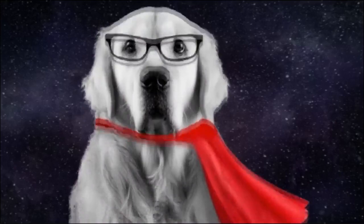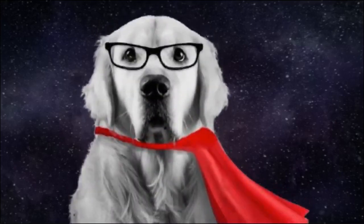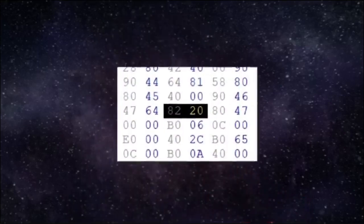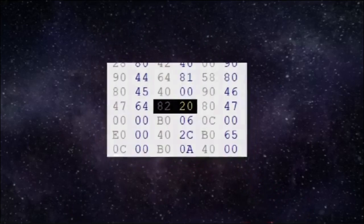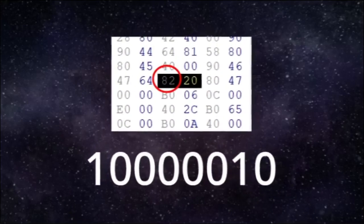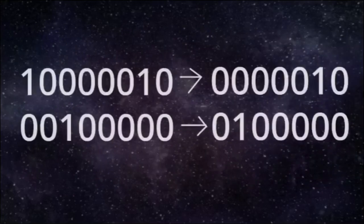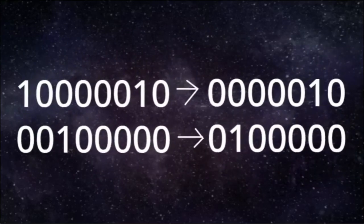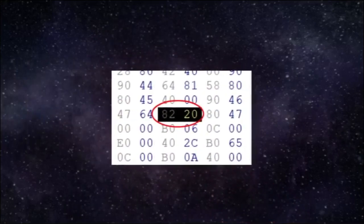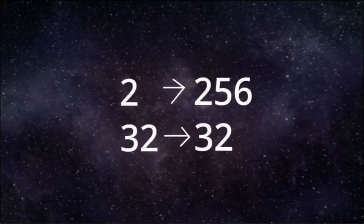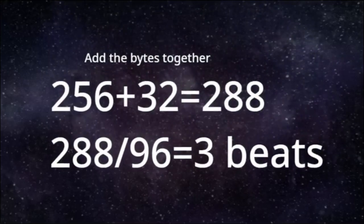Next, I will tell you about delta times. Delta times occur between every event in the MIDI file. To properly read delta times, you must first convert them to binary. A delta time can be made of multiple bytes, especially for longer notes. If the binary value starts with a 1, then it means it is not the last byte of the delta event. If the binary value starts with a 0, then it is the last byte of the delta event. To find the real value, remove the first bit so you will have 7 digits, then convert that into decimal. The delta time is then read like a base-128 number. For example, if your delta time has 2 bytes, multiply the first byte by 128 and the last byte by 1. Finally, divide your value by the ticks per beat mentioned earlier.